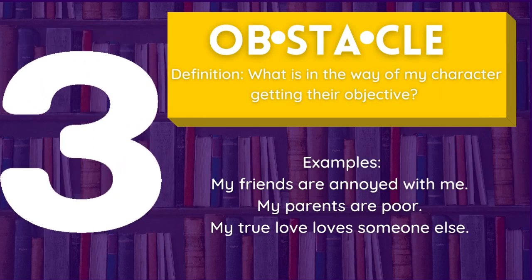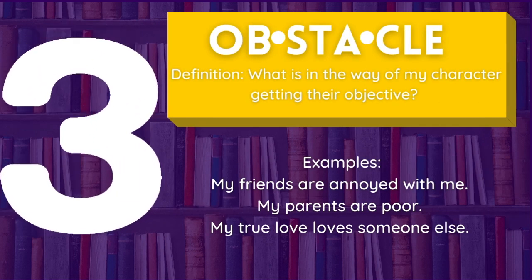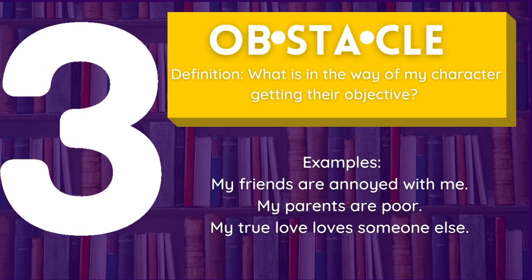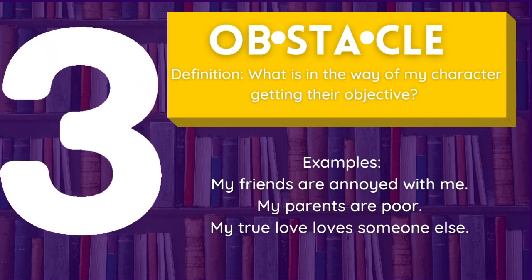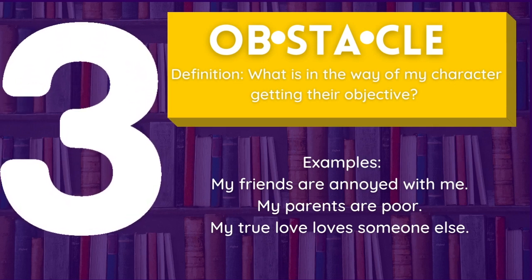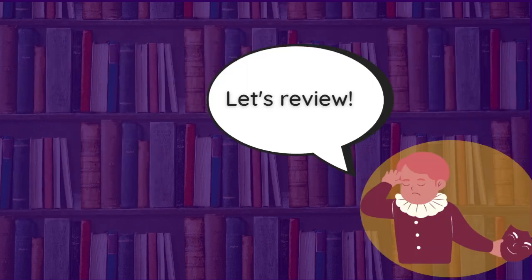Number three: obstacle. An obstacle is what's in the way of the character getting their objective — their friends are annoyed, their parents are poor, or their true love is in love with somebody else.